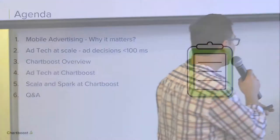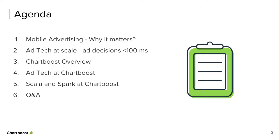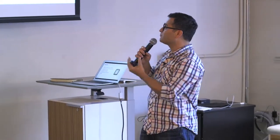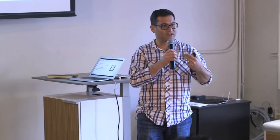With a quick show of hands, how many of you have either worked in advertising technology or are familiar with it? Quite a few. How many of you use Spark? Good. So we're going to talk about mobile advertising and why it matters, ad tech at scale — how decisions are made in 100 to 200 milliseconds. Then we'll cover Chartboost, Scala and Spark use cases, and leave time for Q&A.